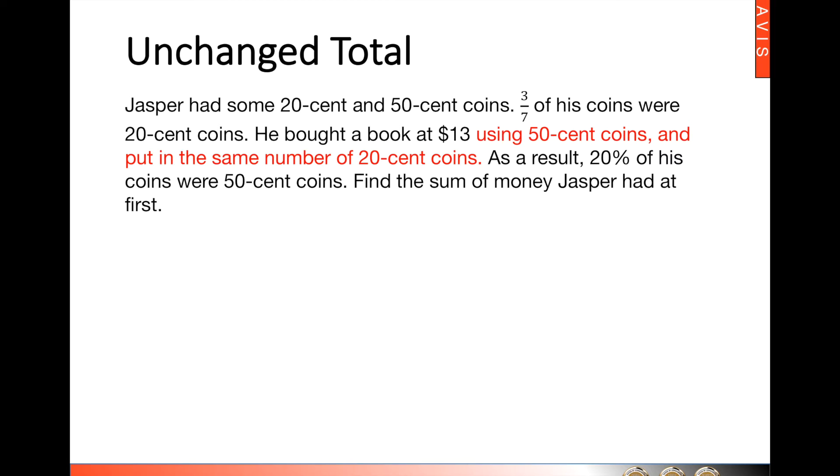One of the key phrases here that shows you that you are supposed to use this unchanged total method is here. He bought a book at $13 using 50 cent coins. So from there, we will realize that there's actually 26 fifty-cent coins that are used.